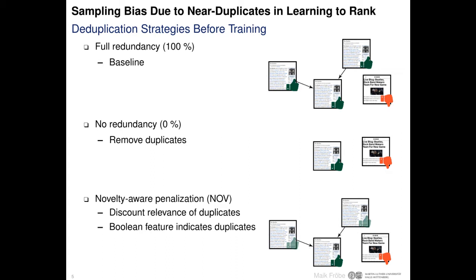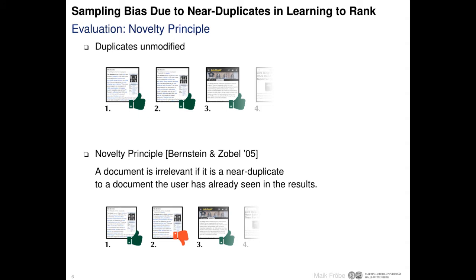This way, we do not remove training data, but models may still learn that users do not want to see near-duplicates. To evaluate trained learning to rank models, we need to handle near-duplicates in evaluation. As a baseline, we use the original relevance judgments and keep duplicates unmodified, so a ranking is rewarded for showing relevant duplicates. To take near-duplicates into account, we apply the novelty principle, which states that a document is irrelevant if it is a near-duplicate to a document the user has already seen in the results.